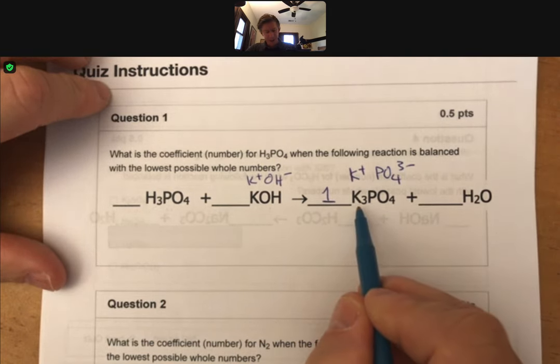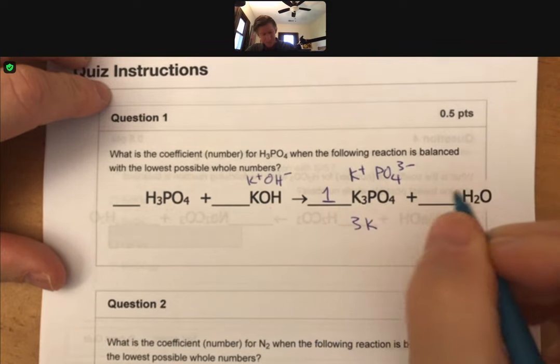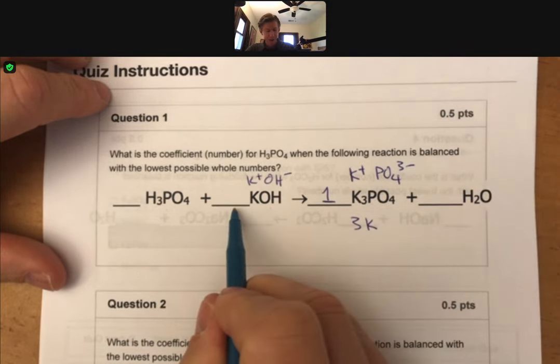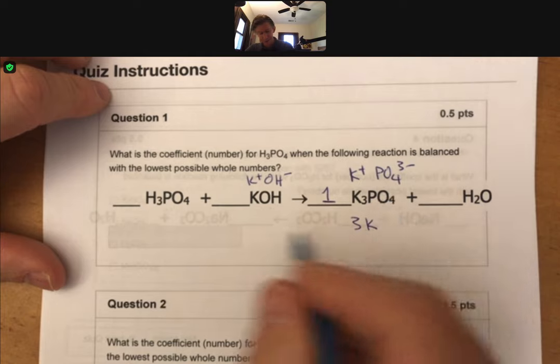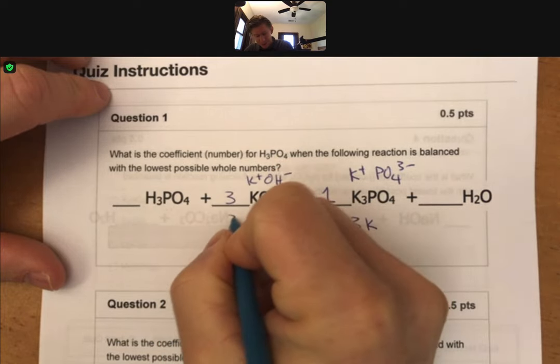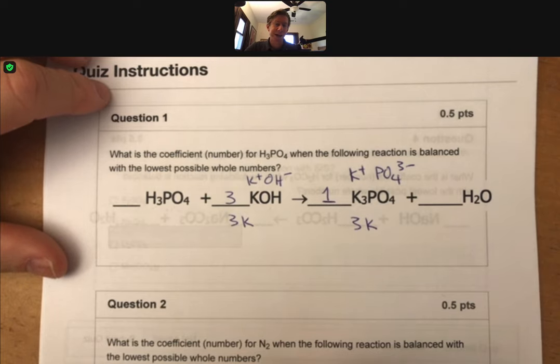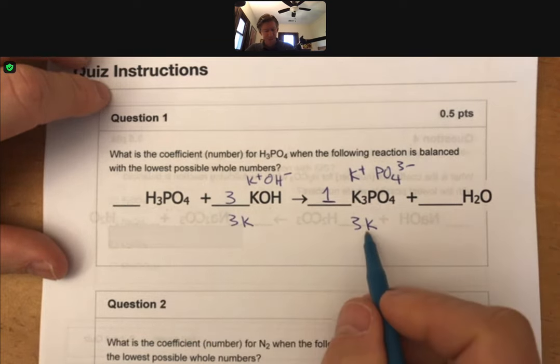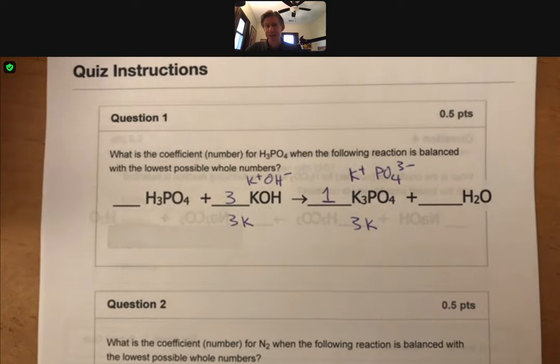Then that means that we have three potassiums, and we're going to start balancing our atoms as we go across. We have three potassiums, so that means we need three potassiums right there. And technically we have three potassium ions, but as far as balancing atoms, we'll just put K there. Actually, either way works.